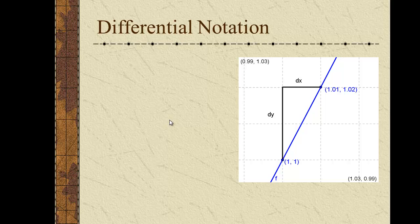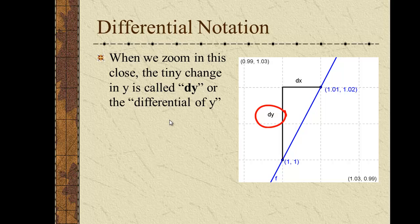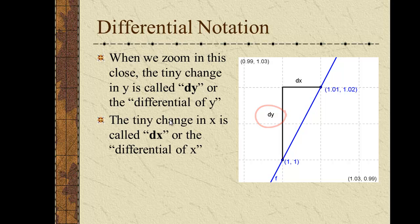So just to give you some notation, when we zoom in this close to a curve, the tiny change in y is called dy, the differential of y. And the tiny change in x is called dx, the differential of x. So the slope of the curve is the rise over the run, or dy over dx.